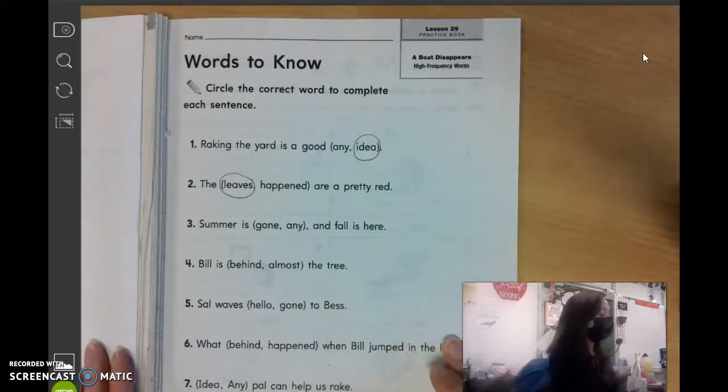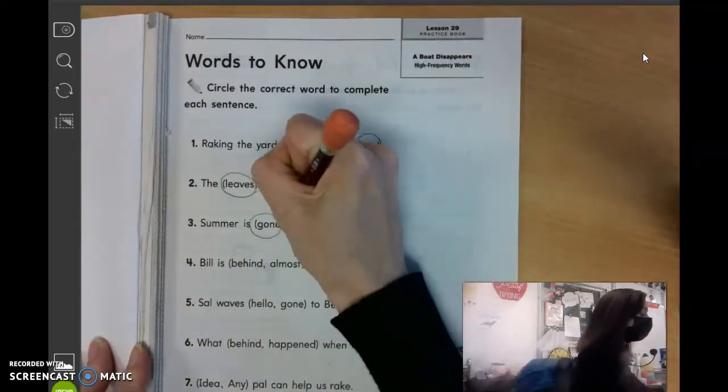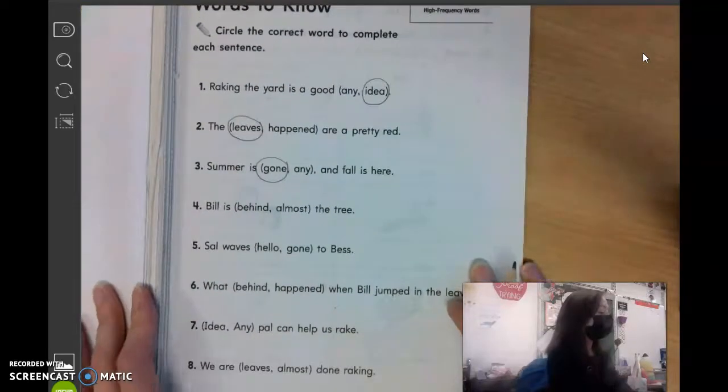Number three, summer is blank and fall is here. Claire? Gone. Which is funny, because summer is almost here and fall is not, is gone. Long gone.